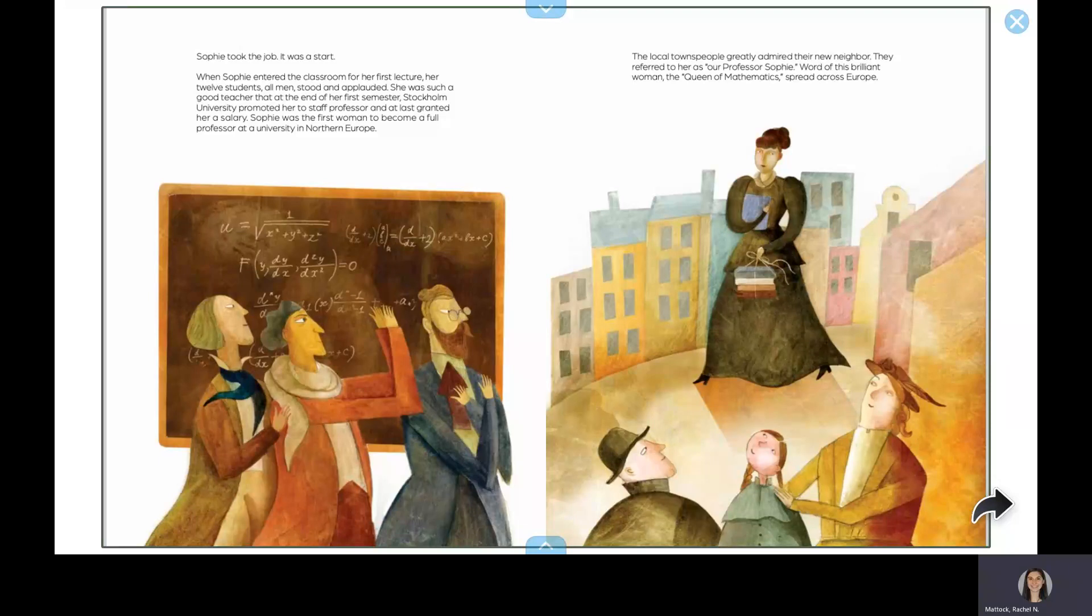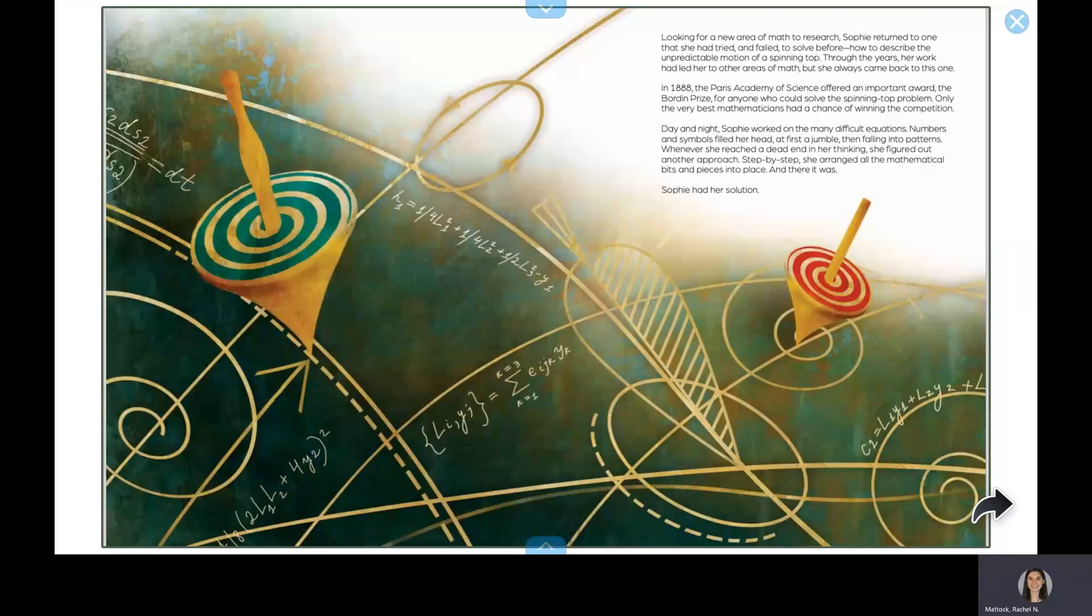Word of this brilliant woman, the queen of mathematics, spread across Europe. Looking for a new area of math to research, Sophie returned to one that she had tried and failed to solve before. How to describe the unpredictable motion of a spinning top. Through the years, her work had led her to other areas of math, but she always came back to this one.